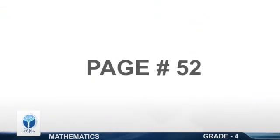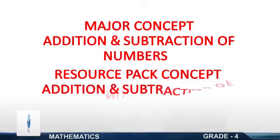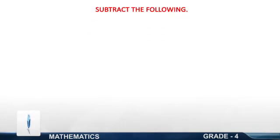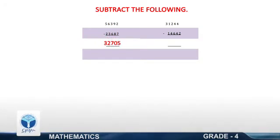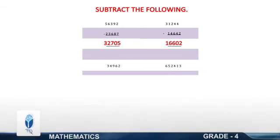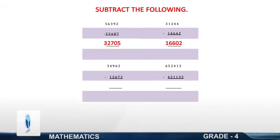Page 52. Major Concepts: Addition and Subtraction of Whole Numbers. Subtract the following. 56,392 minus 23,627. Yes, your answer is 23,705. Next question: 31,244 minus 14,642. Yes, your answer is 15,602. Next: 34,962 minus 12,672. Yes, your answer is 22,290.